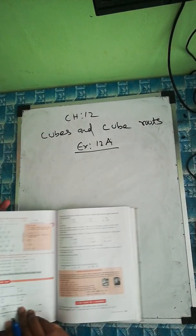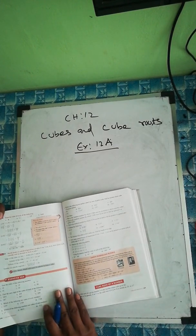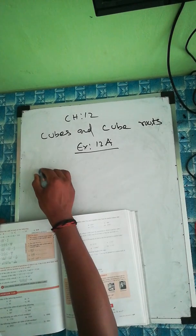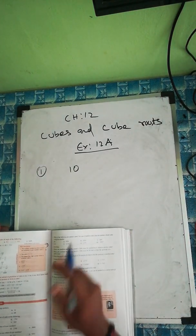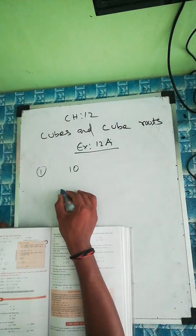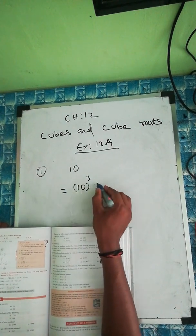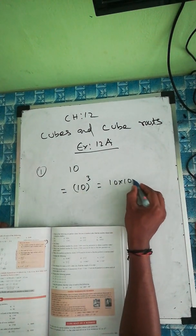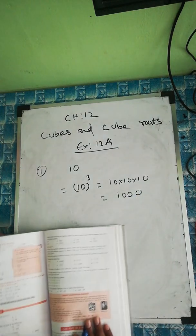So the next chapter, chapter 12, cubes and cube roots. So here you can see the first question: find the cubes of the following number. For the first question, find the cube of this number means you multiply 3 times. So 10 power 3, cubes means 10 power 3, so 10 into 10 into 10. The whole number you multiply, it will be 1000.